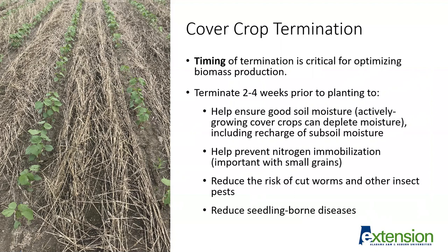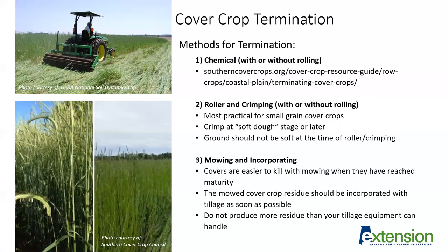There are producers who are able to plant into standing cover crops or terminate directly at planting or right after planting. However, we recommend that if you're attempting to do this, you start out on a very small area because it is a bit more risky. There are some benefits to terminating late, but we suggest trying that on a very small acreage first so you can learn to manage it appropriately. There are several different methods for termination. Chemical termination means spraying with herbicides. We have information about specific herbicides and tank mixes for specific cover crops on southerncovercrops.org. The advantage of chemical termination is that we can leave the residue on the soil surface, which is very important for weed suppression and improving soil moisture storage.